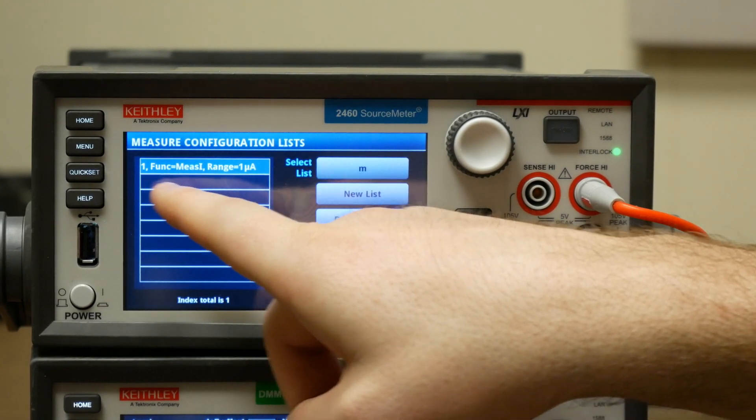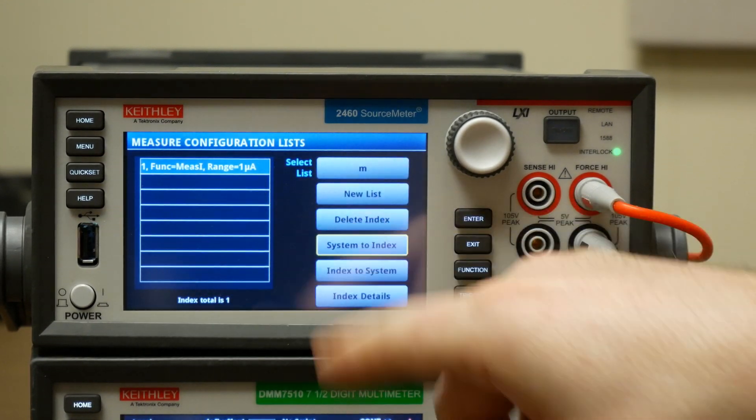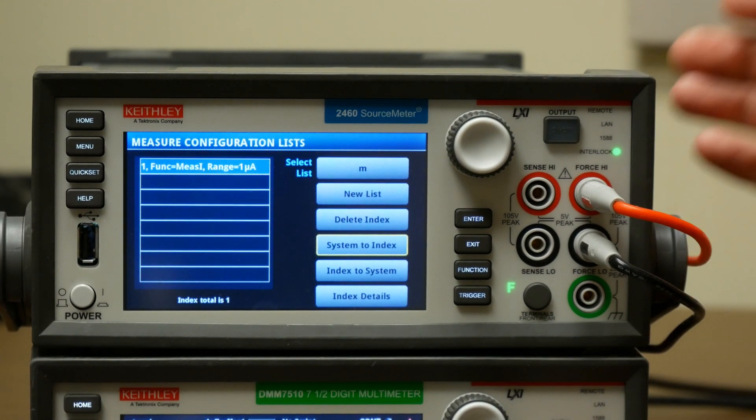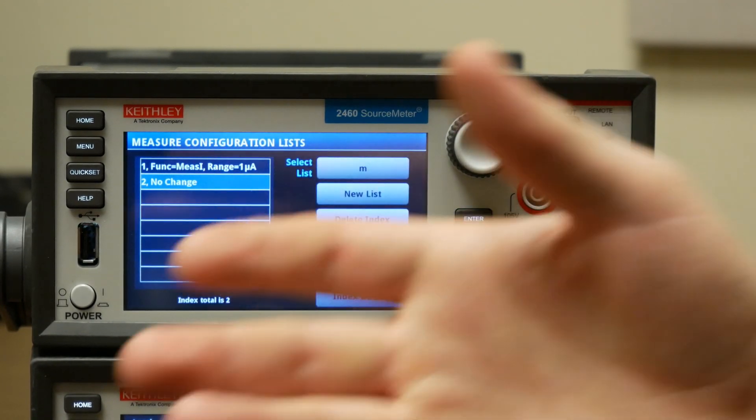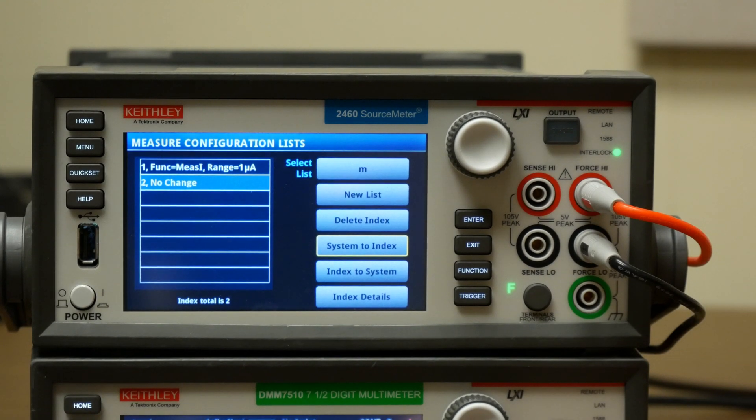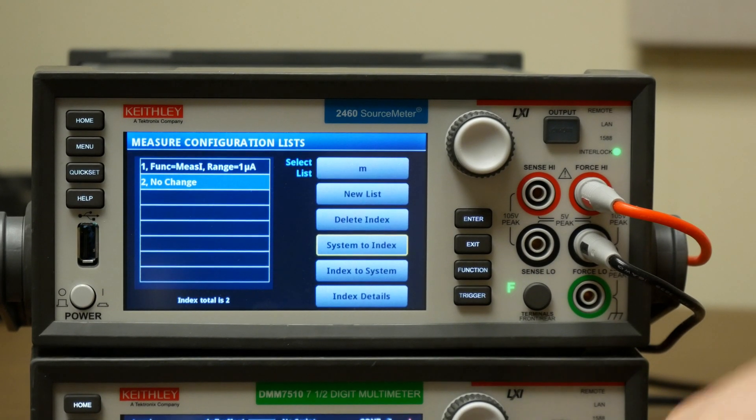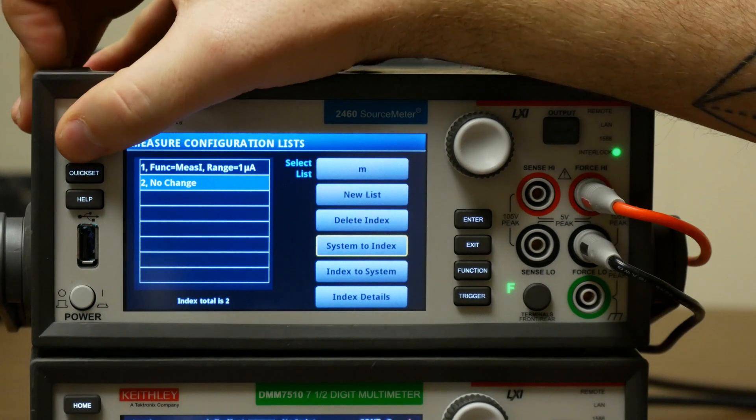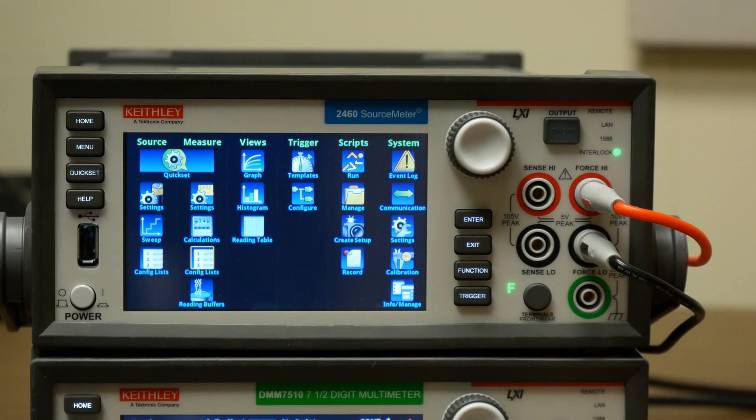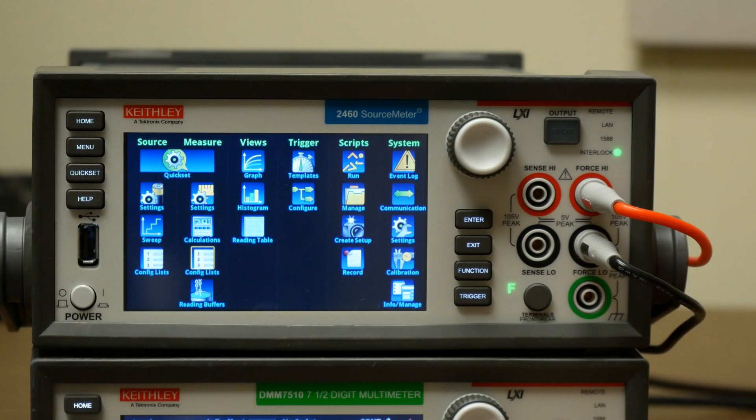And this will set up the configuration list as we have the instrument set up to measure now. And we'll just do another one so that they have the same number of indices in both configuration lists.